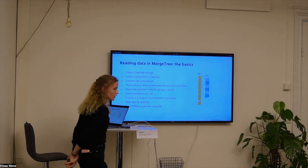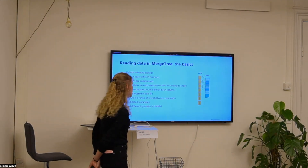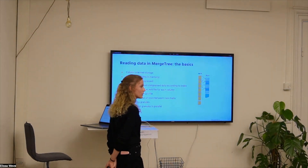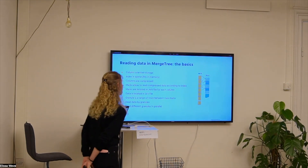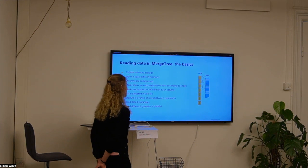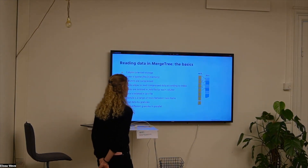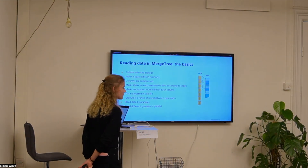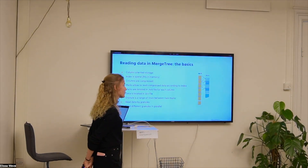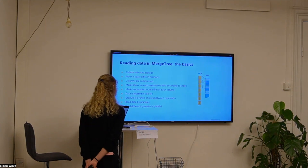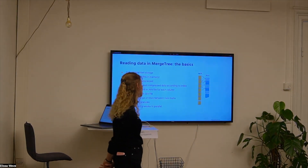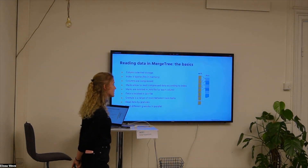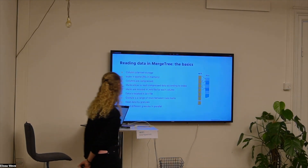To understand how we optimize read performance, we need to understand how reading is done in ClickHouse. The storage is column-oriented, the index is sparse and fits in memory, and columns are compressed. In order to read this compressed data, we have marks — they allow reading only the required data according to the index. Marks are located in the .mrk extension file, and the data itself is in the .bin extension file. These two paired files exist for each column, because the storage is column-oriented.